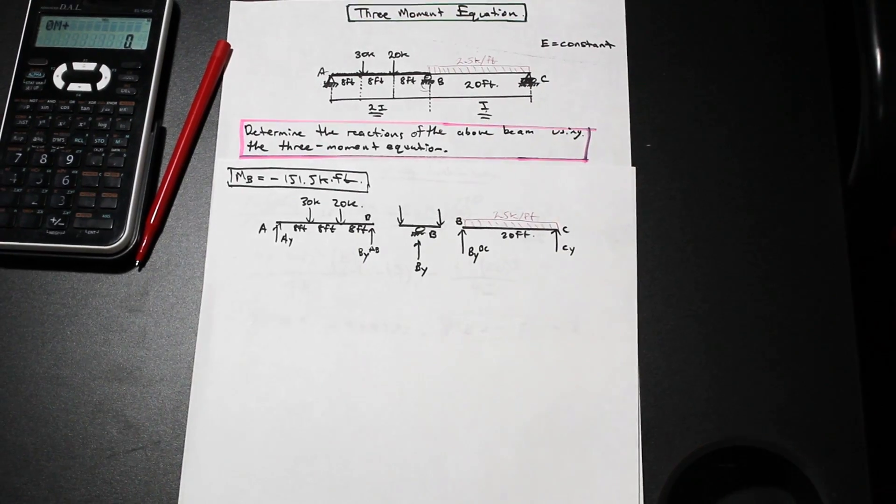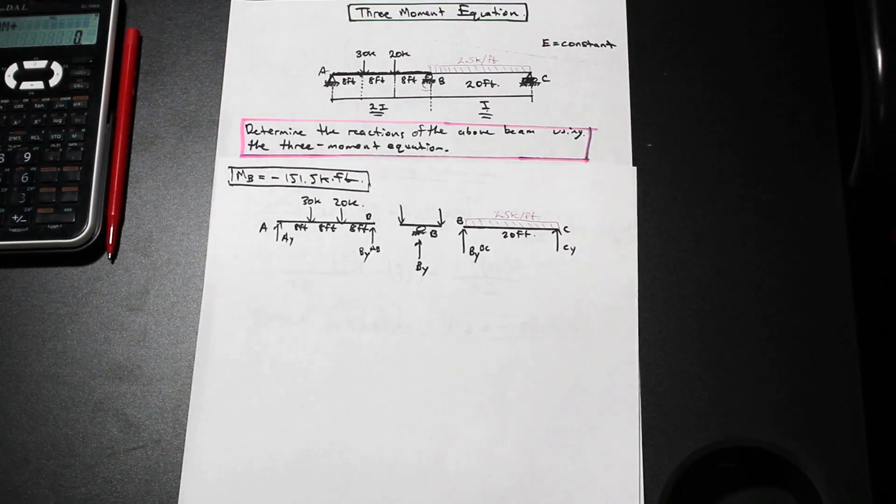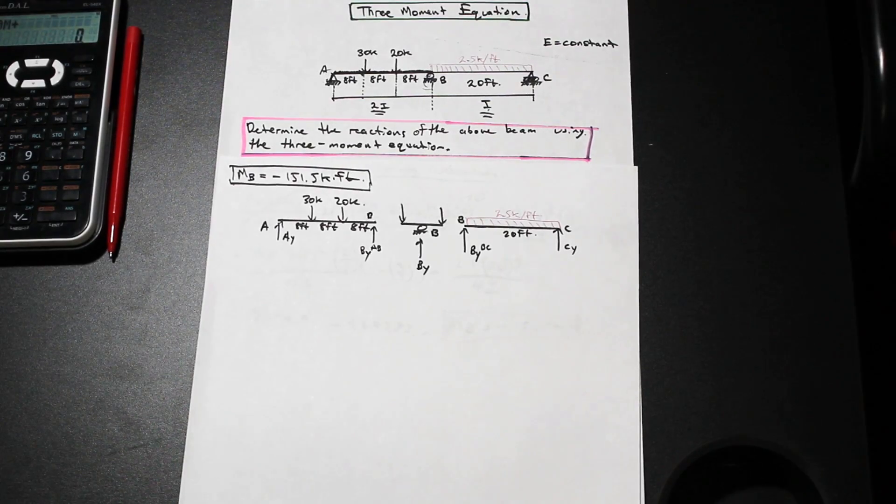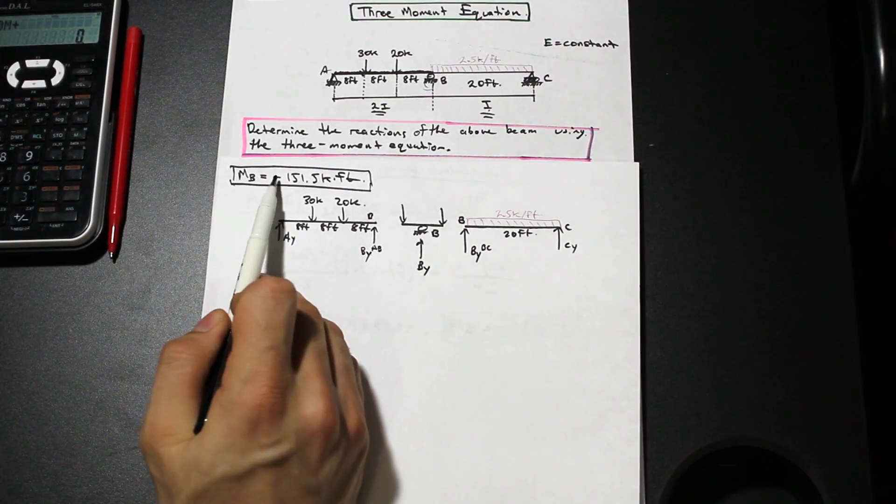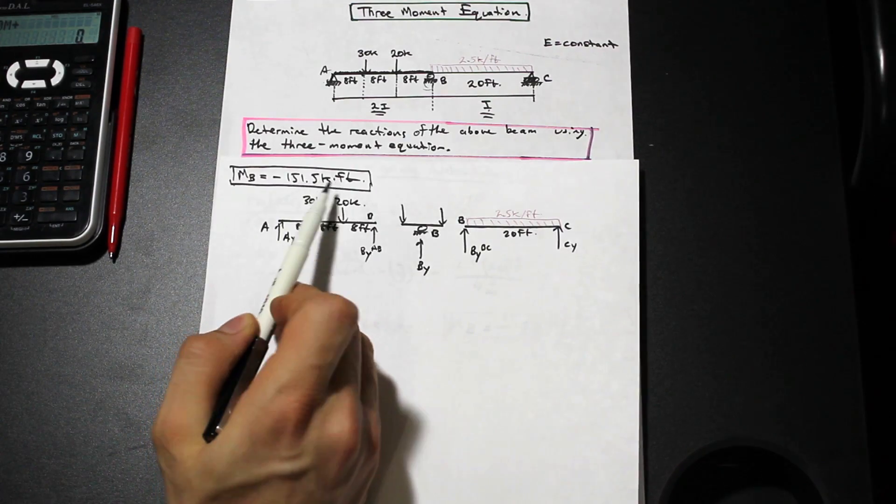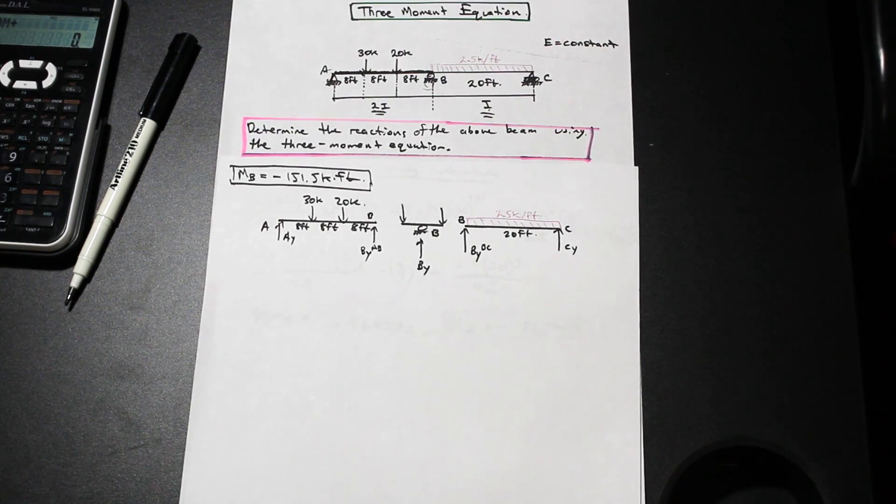Hey guys, we're back with our second portion of this three-moment equation question where we're solving for a first-degree indeterminate beam. At the end of the last video we determined that the moment at B is equal to negative 151.5 kip feet. So what does that mean exactly and how do we use that to get the reactions on the beam?